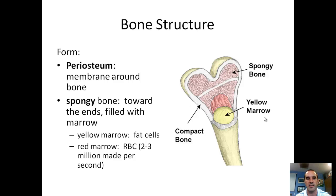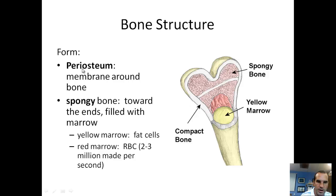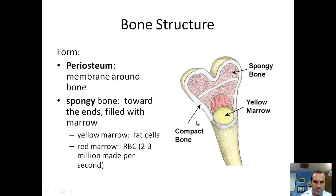Now let's focus on bone structure. If we took an individual bone and broke down the parts of it, you've got a thing called the periosteum — that's a membrane around the bone, a little covering. Next time you eat a chicken wing, if you snap it, you can see that periosteum.